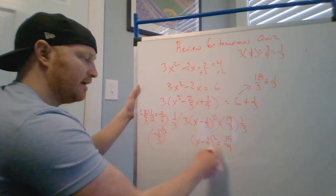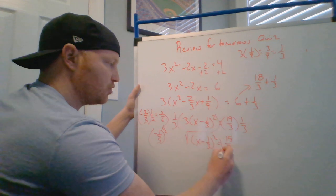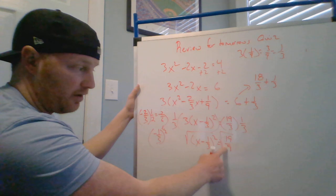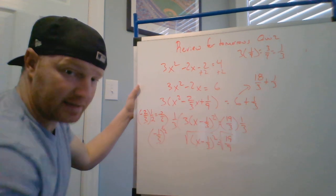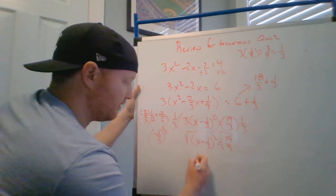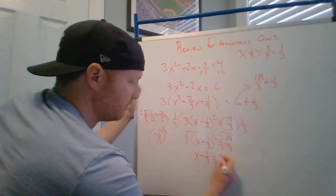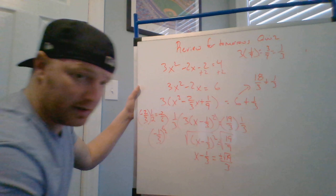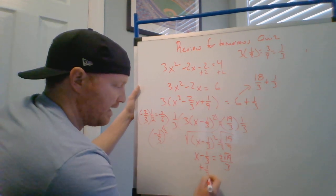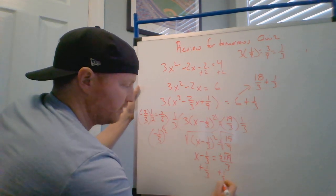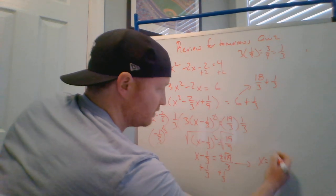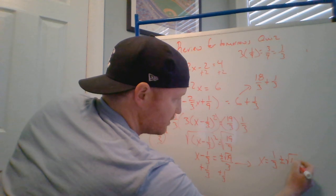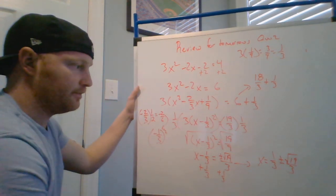So now this says x minus 1/3 squared equals 19/9. I'm liking this because I see a perfect square at the bottom. I'm going to square root both sides. And because I know I cannot have a radical in the denominator, and I'm not going to because the square root of 9 on the bottom is the same as 3. This is now x minus 1/3 equals plus or minus square root of 19 over 3. Last but not least, I'm going to add 1/3. I'm going to add 1/3, and I'm going to get an answer of x equals 1/3 plus or minus square root of 19 over 3.